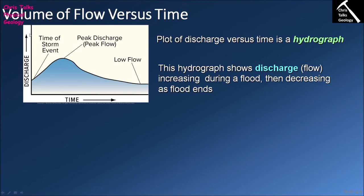When rain comes down and hits the ground, the water typically takes a little while to get into the river. As the water from the thunderstorm starts to enter the river, we see discharge begin to increase because the volume of water is getting higher — area increases and velocity increases. We hit the peak discharge, which is the maximum discharge the river achieves, and then discharge decreases back to the starting level.